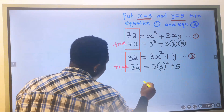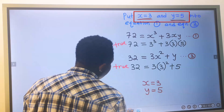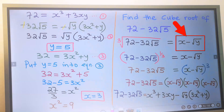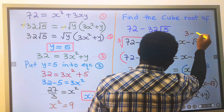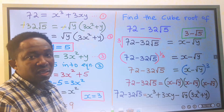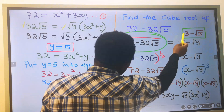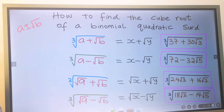We conclude that x is 3 and y is 5. Taking x minus the square root of y to represent the answer, our answer becomes 3 minus the square root of 5, and this is our final answer. If you check with your calculator, this is the same result. You have learned how to solve the cube root of a binomial quadratic surd. I hope this was helpful.